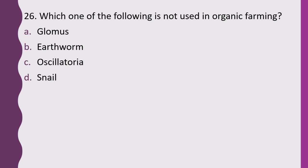Question 26. Which one of the following is not used in organic farming? Glomus, earthworm, Oscillatoria, or snail. The correct answer is option D, snail.